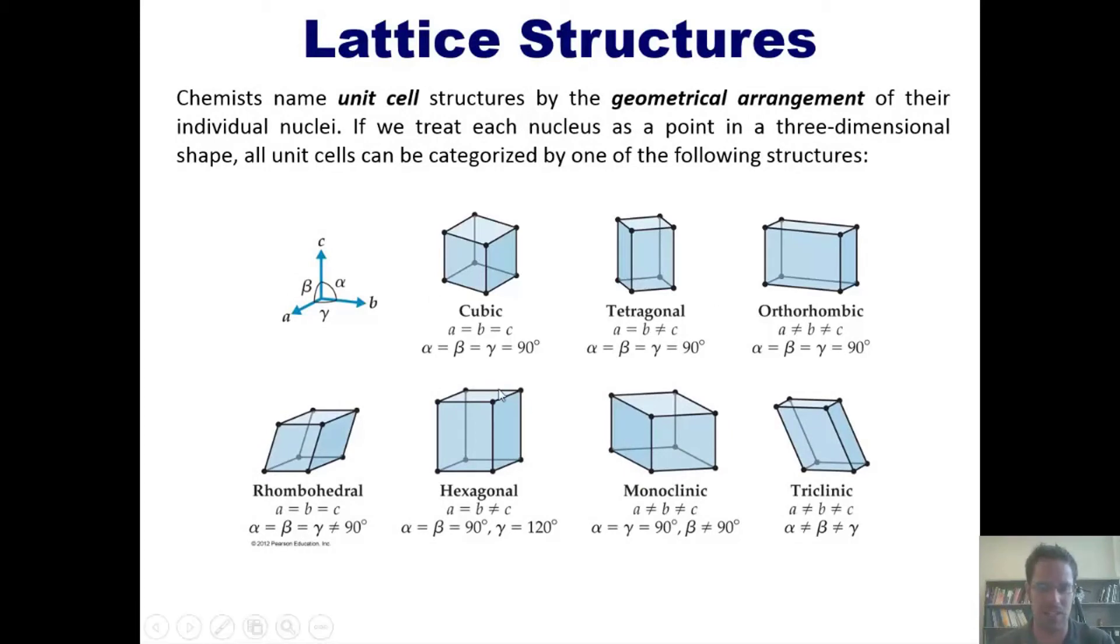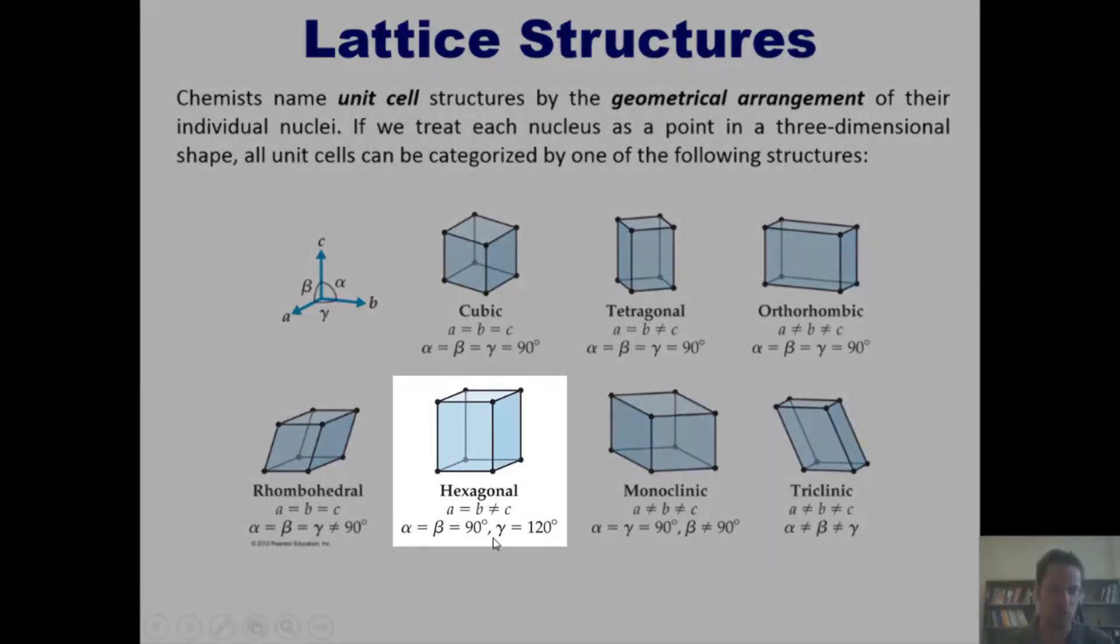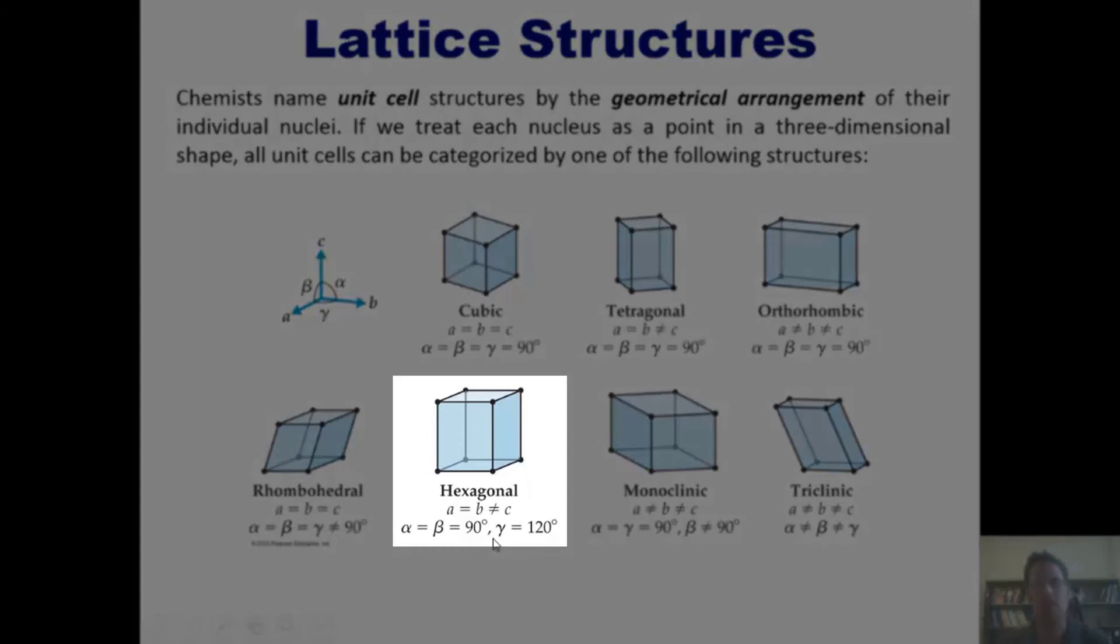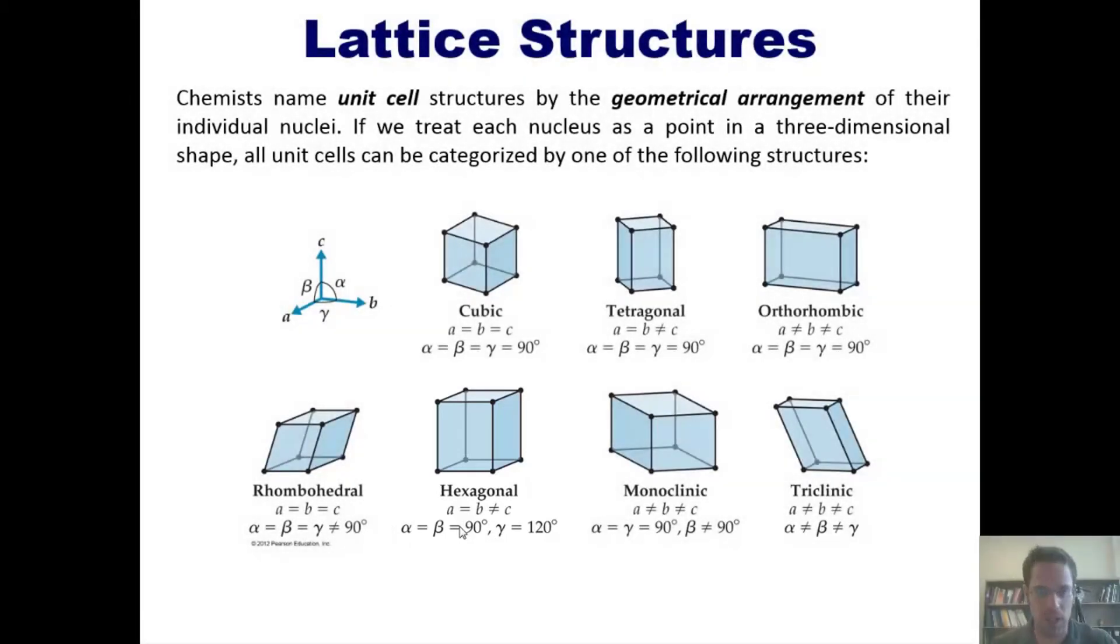That matches this one so far—the hexagonal. Let's see if the side lengths also match. As we saw from our data, we're also looking for a unit cell that has two lengths that are identical and one that is different. Does that match the hexagonal? Yes it does. So the correct answer to this question is hexagonal.